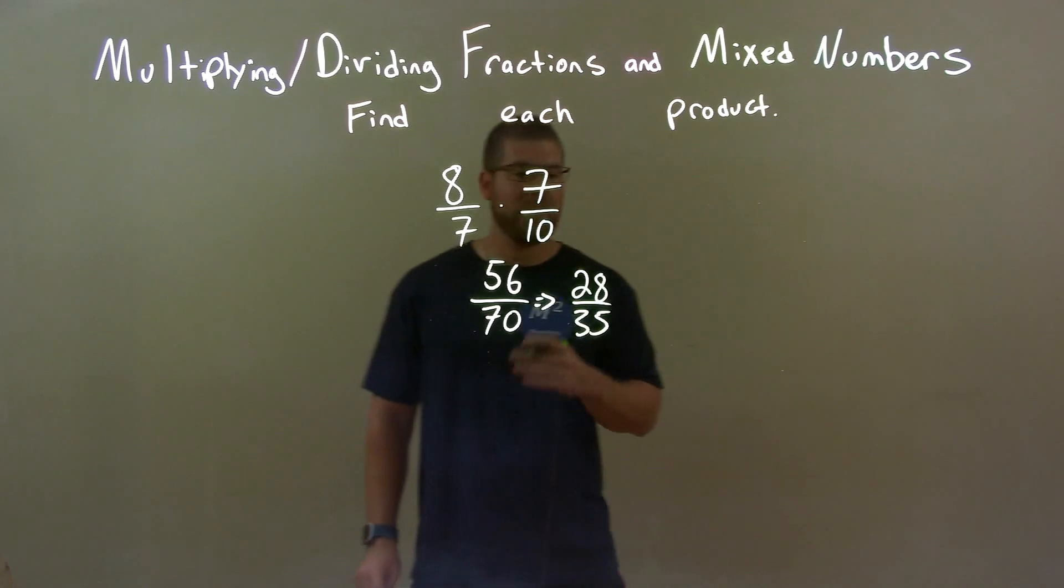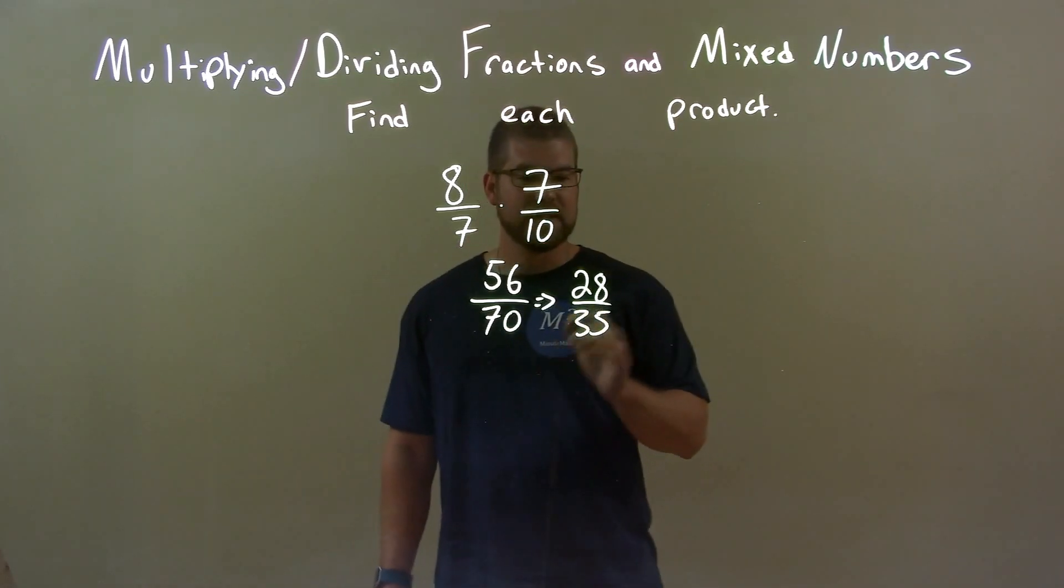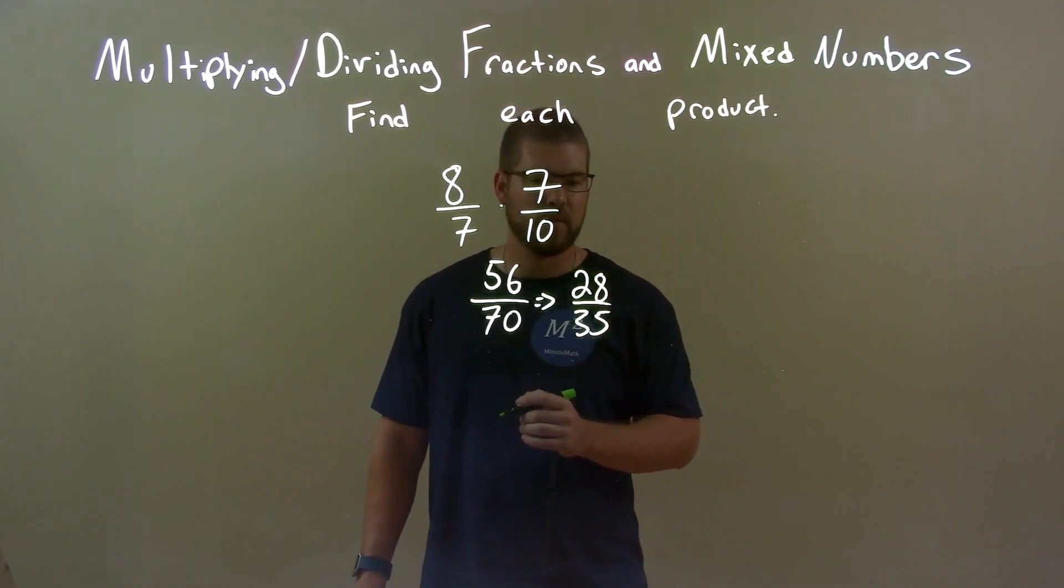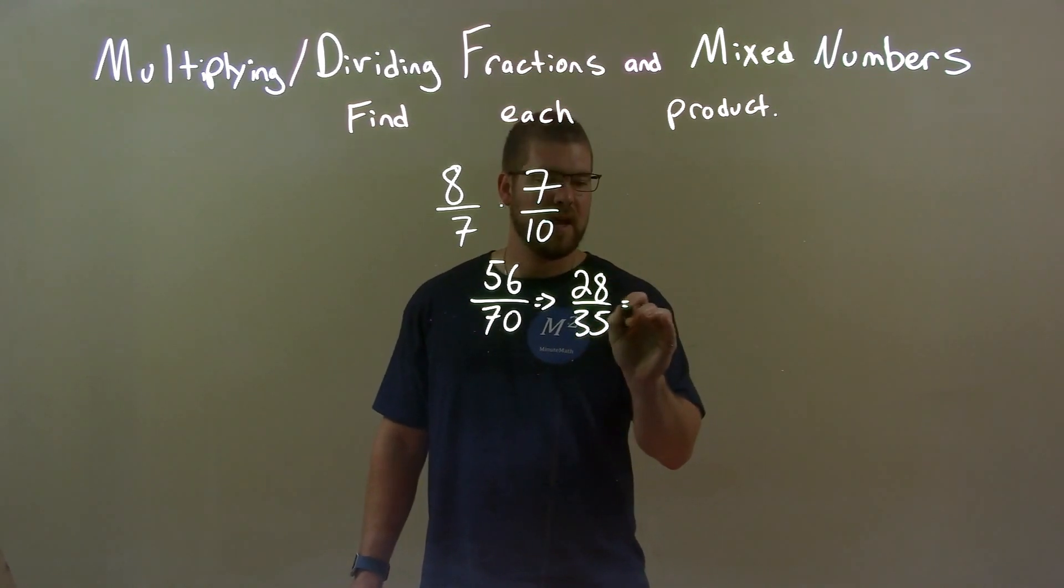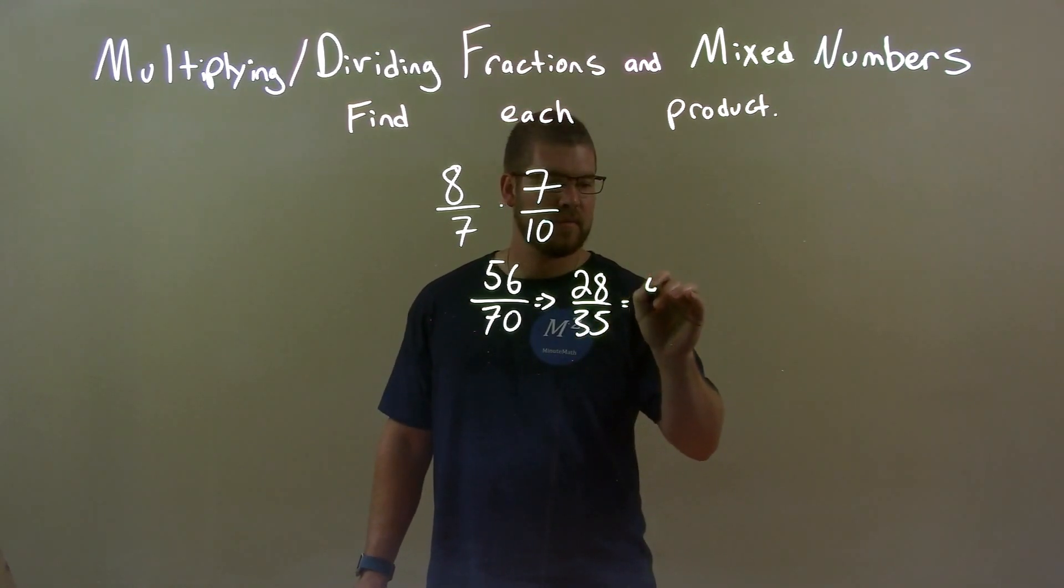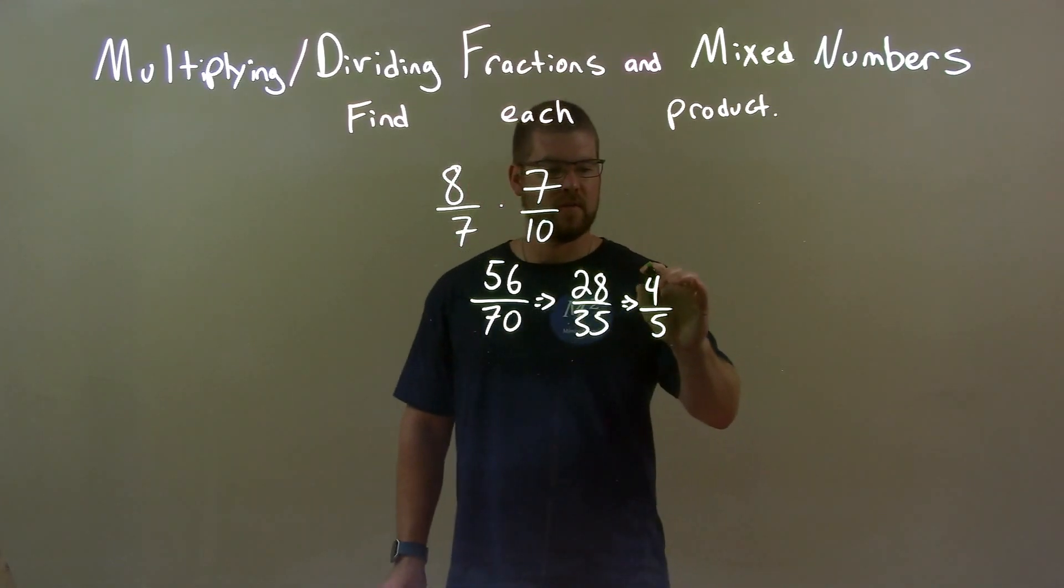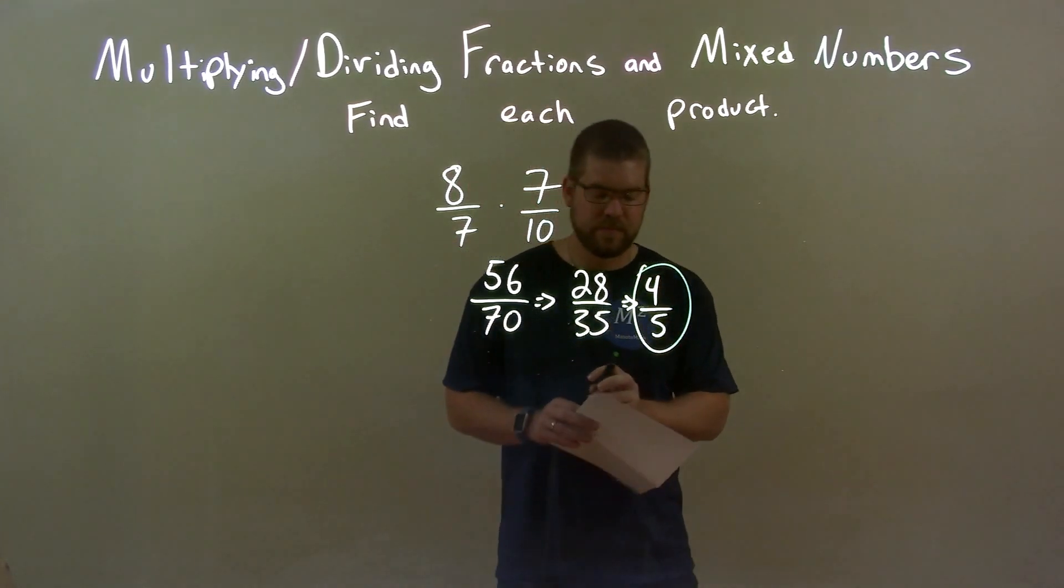Well, can this be broken down anymore? Actually, I can see 7 goes into each one of these numbers. 7 goes into 28 four times, and 7 goes into 35 five times. And so our final answer here is just 4 fifths.